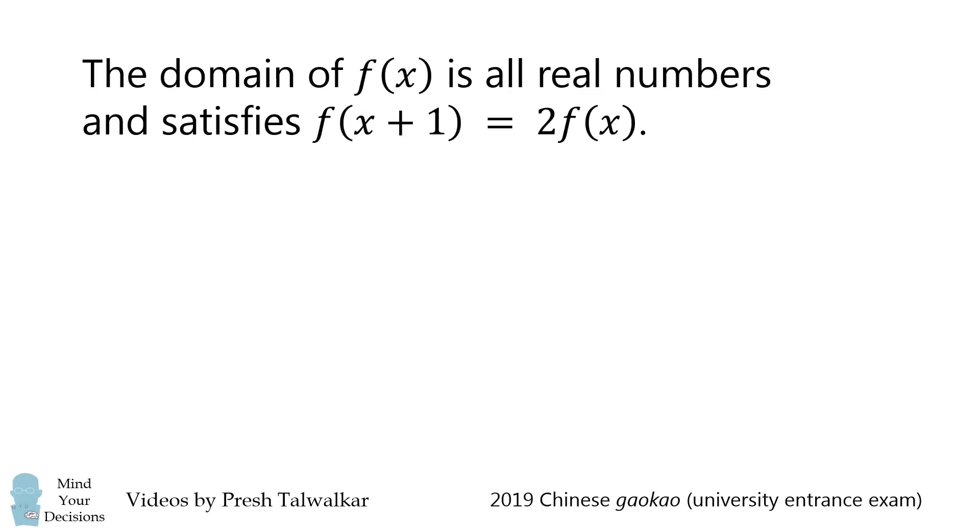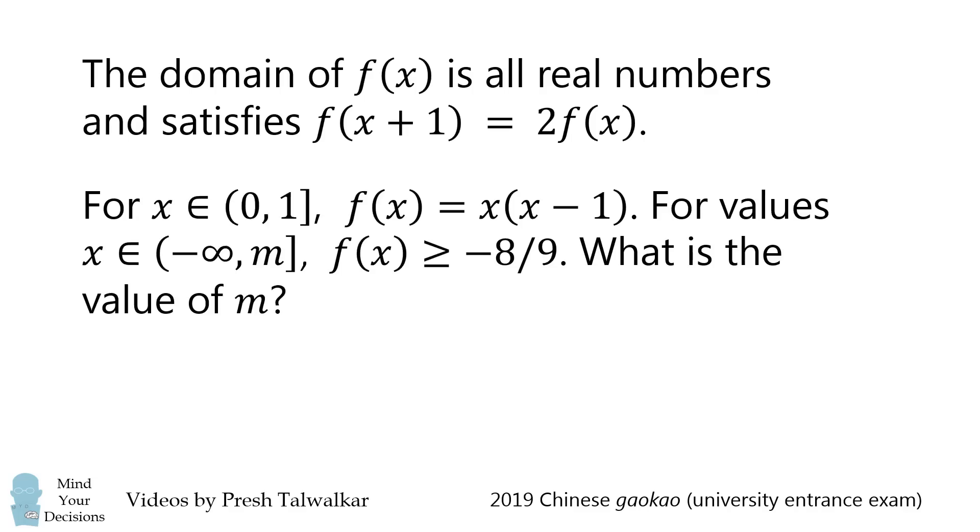The domain of f of x is all real numbers, and satisfies f of x plus 1 is equal to 2 times f of x. For x in the interval 0 to 1, not including 0 but including 1, f of x is equal to x times the quantity x minus 1. For values where x goes from negative infinity to m inclusive, f of x is greater than or equal to negative 8 over 9. What is the value of m?